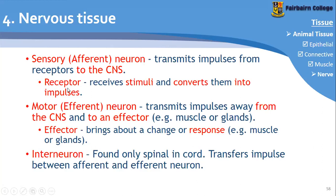A receptor is something that receives information from outside. For example, you have receptors on your tongue that tell you when you're eating different foods and send that information to your brain. You have receptors in your nose, receptors on your skin — those are called mechanoreceptors — to tell you when you're touching something. You have a bunch of receptors all throughout your body receiving different information and sending it to the brain.